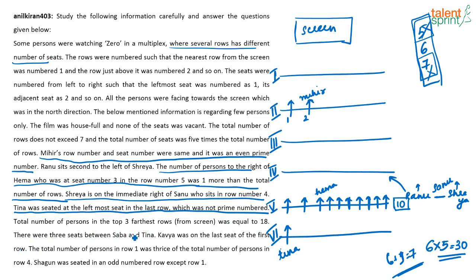The total number of persons in the top 3 farthest rows (rows 4, 5, and 6) equals 18. There are 3 seats between Sabha and Tina, so Sabha is in seat 5 of row 6. Row 5 has 10 people, row 6 has 5 people — that's 15 accounted for. The remaining 3 must be in row 4, and we already know those are Ranu, Sanu, and Shreya.